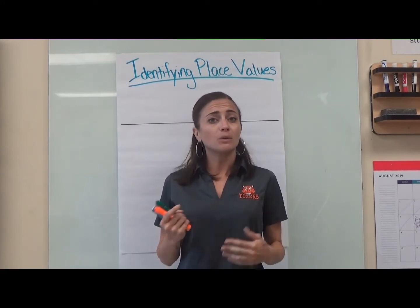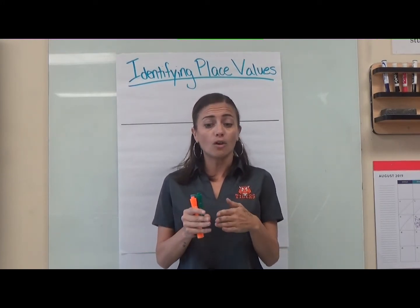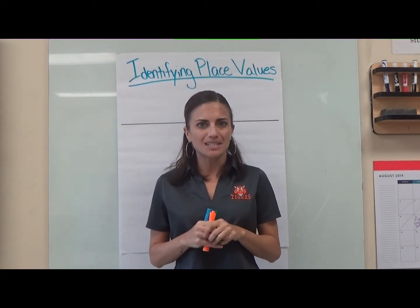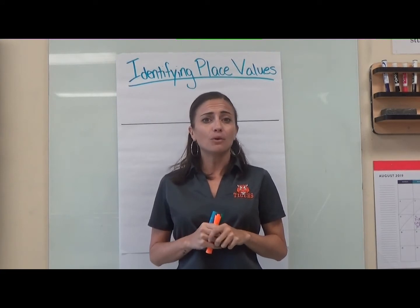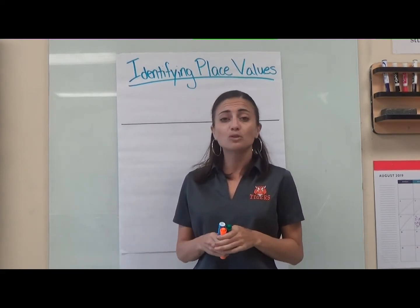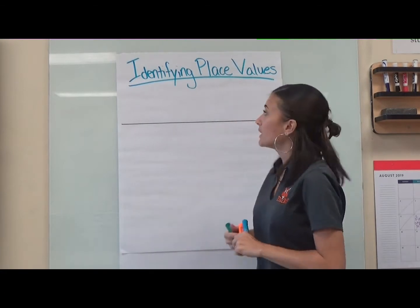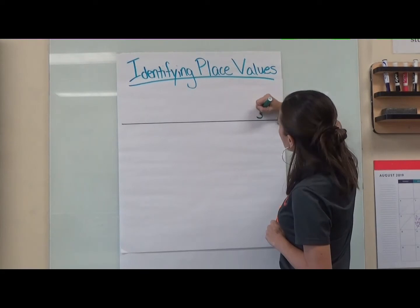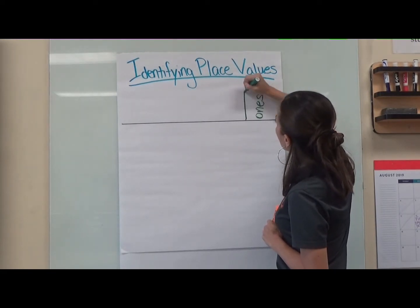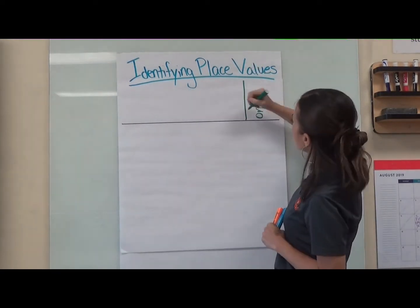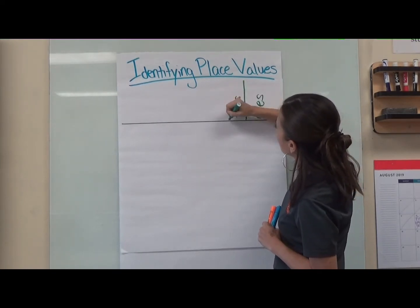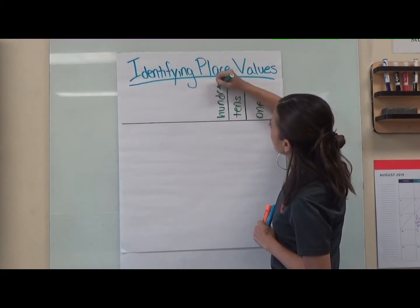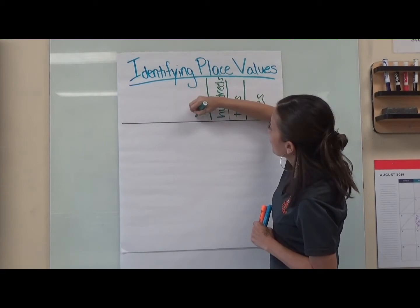When we're talking about value and place value, we first need to understand all of our place values that we're using this year. Last year you went up to the thousands place in third grade; now in fourth grade we're going even bigger. Let's review together: our very first place value, our smallest one, is our ones place. After that we have our tens place, then our hundreds, and our thousands.